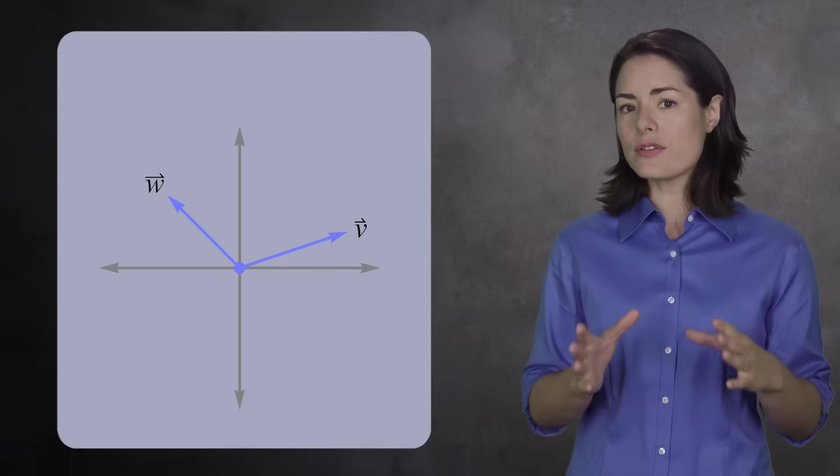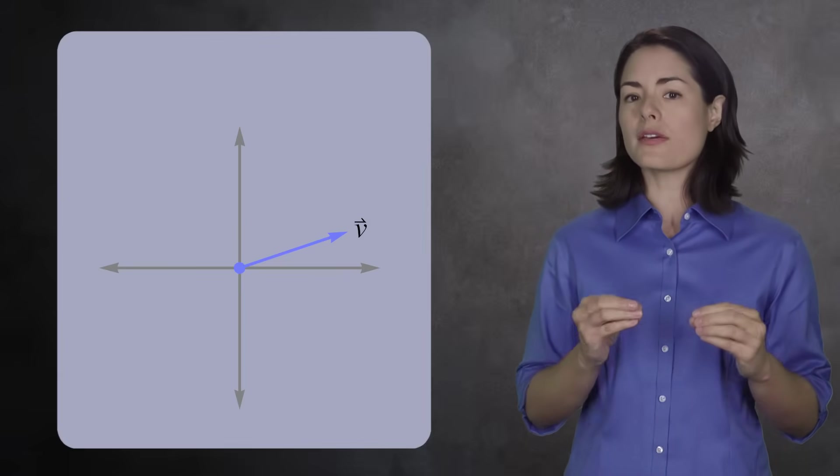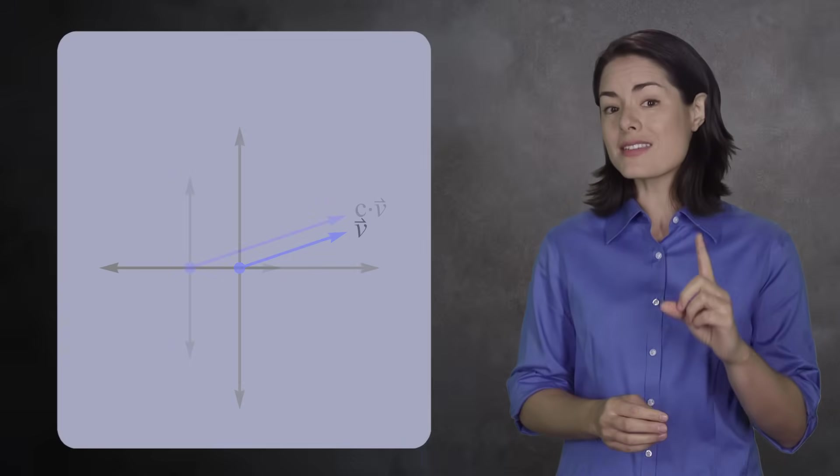You can add any two vectors to get a third vector. And if you multiply the coordinates by a number, you can scale a vector.